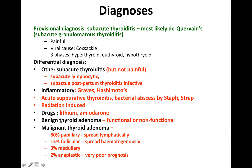It could also be due to radiation if they've had recent radiotherapy to the area, or they're on drugs such as lithium or amiodarone. Alternatively, it could be a neoplasm — benign or malignant. A benign thyroid adenoma can be functional or non-functional. In malignant thyroid cancer, the most common cause at 80% is papillary thyroid carcinoma, which spreads lymphatically. 15% are follicular, spreading hematogenously. 3% are medullary and 2% are anaplastic, which unfortunately have a very poor prognosis.